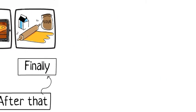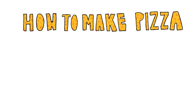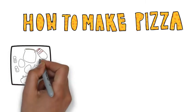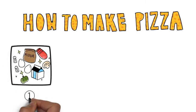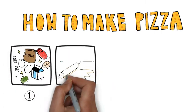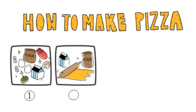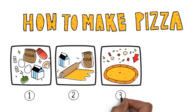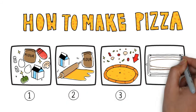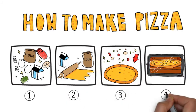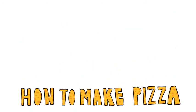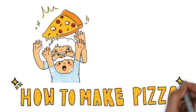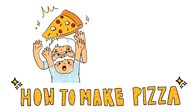How to make a pizza? First, have all the ingredients ready. Then roll the flour using a rolling pin. After that, add toppings and bake the pizza. Finally, the pizza is ready. Yum yum!